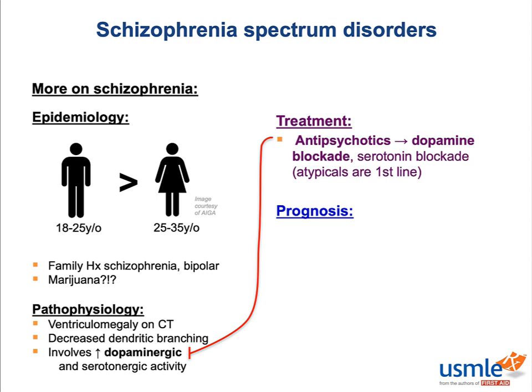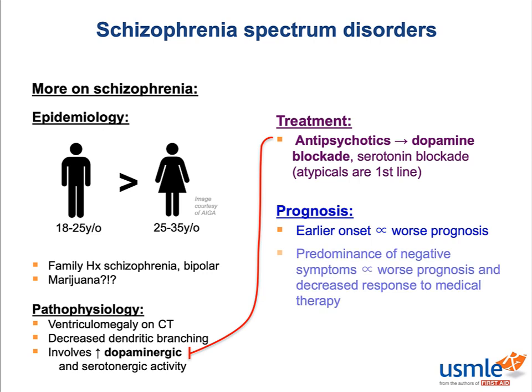There are a couple of things that help psychiatrists predict whether or not a patient will do well with treatment. First, the age of onset — the earlier the age, the worse the prognosis, meaning schizophrenic men in general tend to do worse. Second, the floridly psychotic hallucinating schizophrenics are not the hardest to treat — positive symptoms tend to respond to medication, whereas negative symptoms really don't. Finally, patients with schizophrenia have a much higher suicide rate than the general population, and this is something you need to screen for.